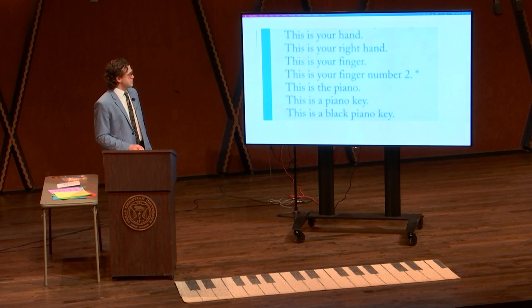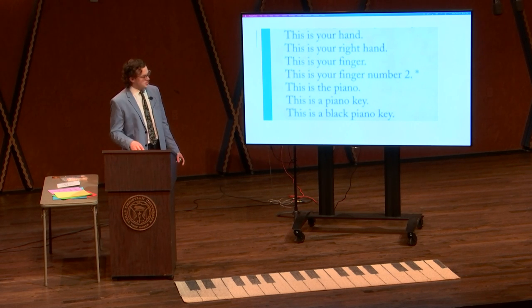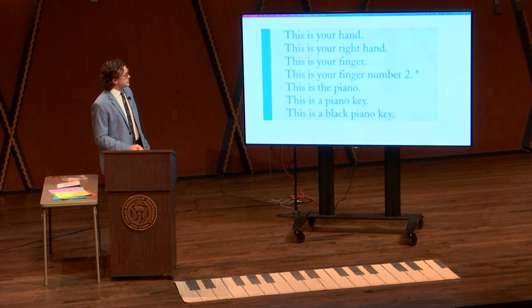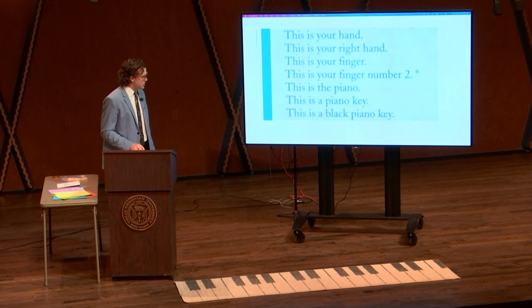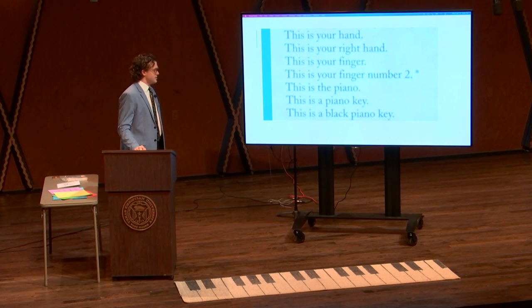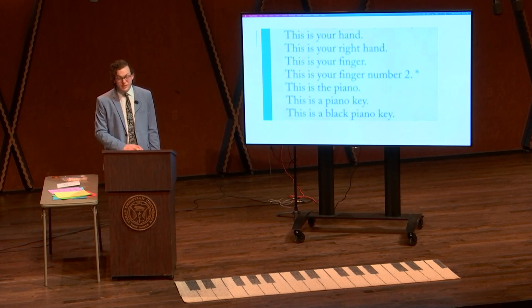And this is an example while teaching a specific piece to an autistic student. He said: 'This is your right hand. This is your finger. This is your finger number two. This is the piano. This is the piano key. This is the black piano key.' Again, being very, very clear in his instructions.